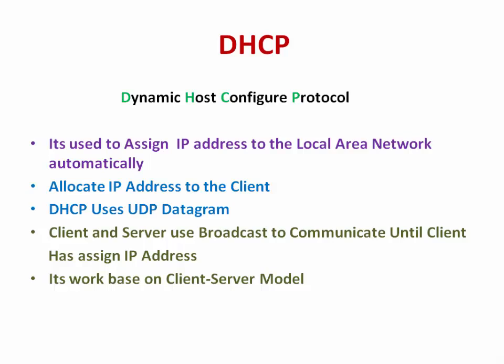DHCP server port number is 67 and client port number is 68. Client and server use broadcast to communicate until the client has been assigned an IP address. It works based on the client-server model.